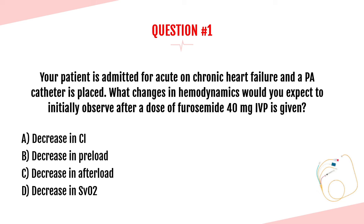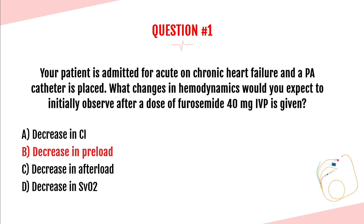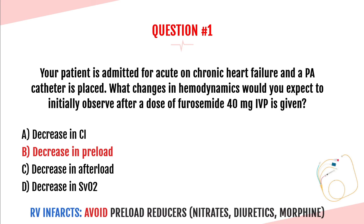The answer is B, a decrease in preload. Furosemide is a diuretic, which means the patient is going to diurese. In doing so, they're going to lose volume and that will be seen as a decrease in their preload. Other preload reducers include nitroglycerin or morphine. And patients you want to avoid preload reducers for are those with RV infarcts — right ventricular infarcts.